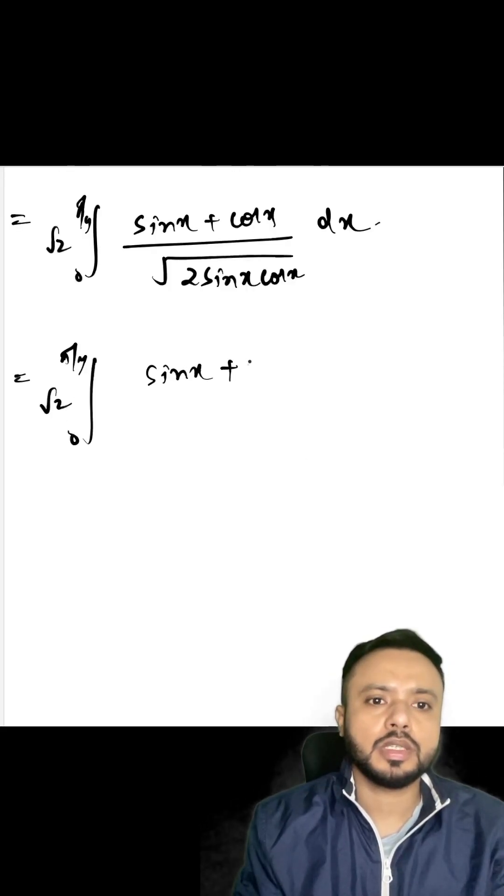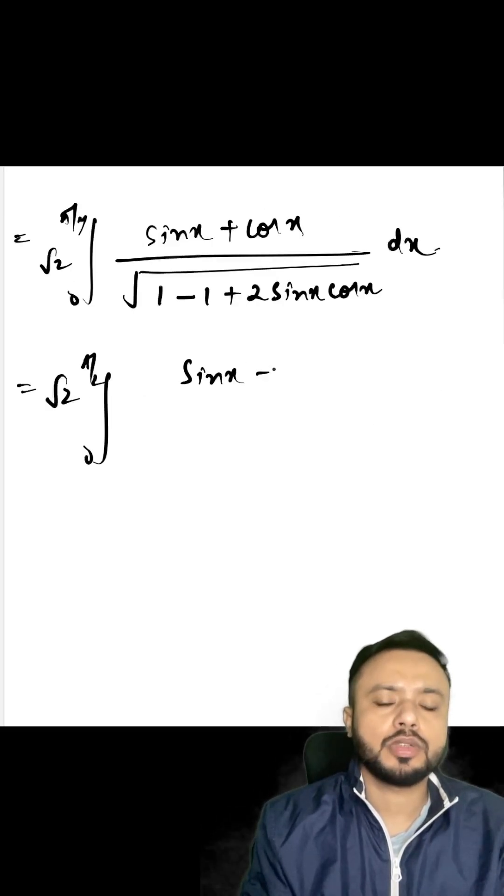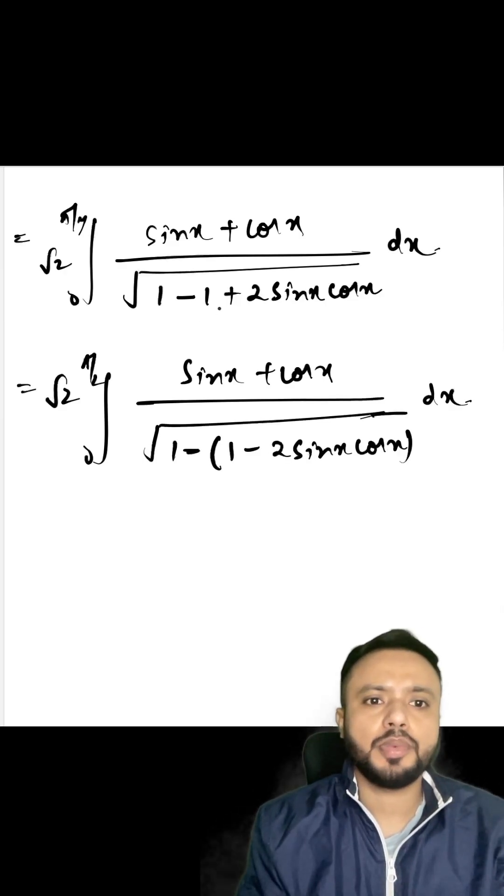Root 2 sine x plus cos x. Now I'm going to add and subtract 1 in the denominator, so 1 minus 1 plus 2 sine x cos x dx. So I can write it as root 2 sine x plus cos x upon root of 1 minus 1 minus 2 sine x cos x dx.